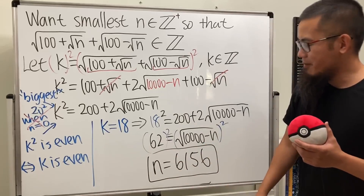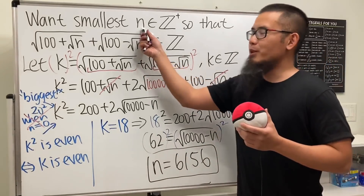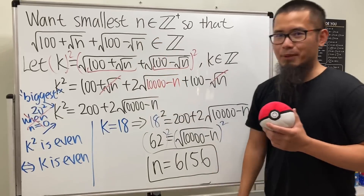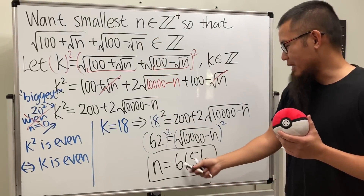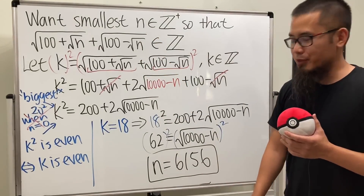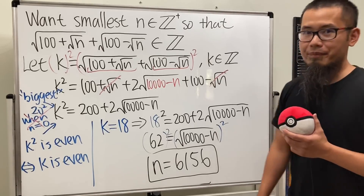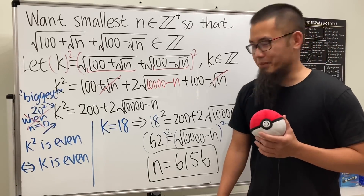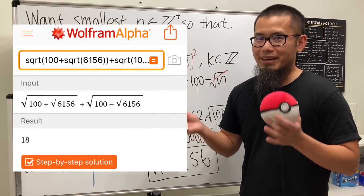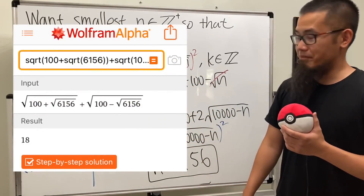So the smallest positive integer n is 6156. Seriously — the question asks for the smallest integer n, and the answer is 6156. But if you put this back into the original expression, yes, we do get our integer.